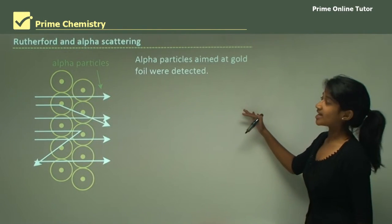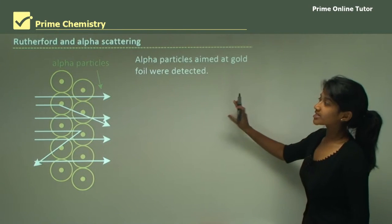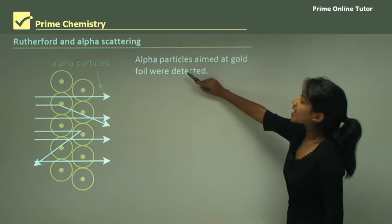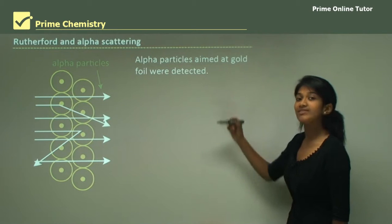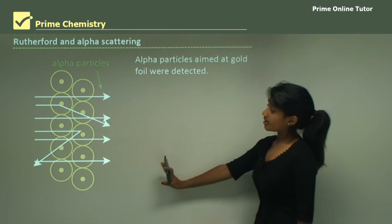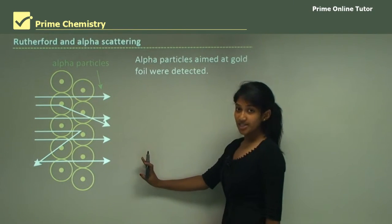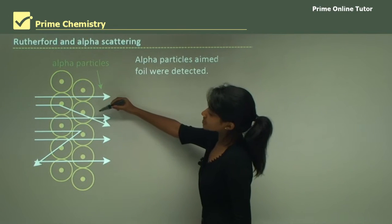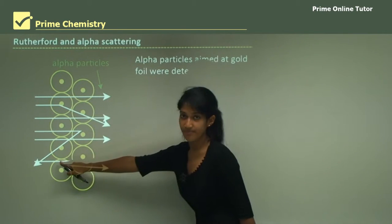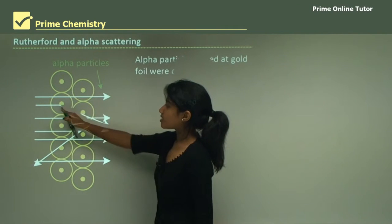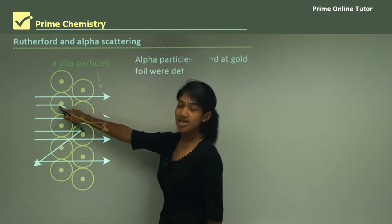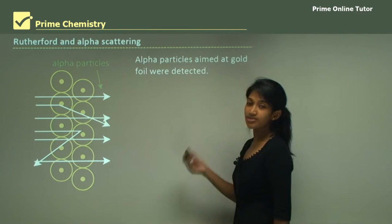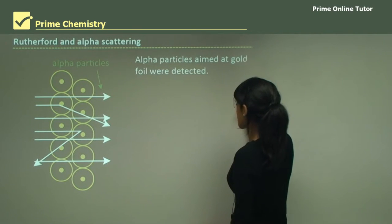Next comes Rutherford and alpha scattering. Alpha scattering is the process he used to come up with his proposal. What he did was aim alpha particles at gold foil, and these were detected. Ideally you should be able to detect all of them, but some of them were deflected. When the alpha particles hit the nucleus, they were deflected. Alpha particles are helium nuclei — the helium nucleus.